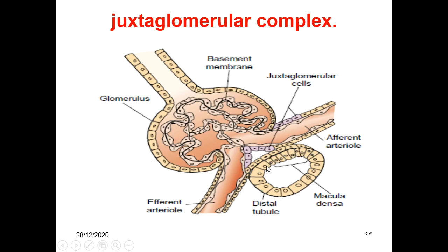The cells situated in the distal tubule nearest to the afferent and efferent arterioles are specialized cells called the macula densa, whereas the cells in the afferent arterioles wall are called the juxtaglomerular cells — specialized secretory cells modified from smooth muscle cells. These juxtaglomerular cells contain inactive renin, which is an enzyme important for the conversion of angiotensinogen into angiotensin.